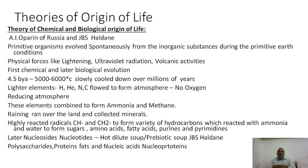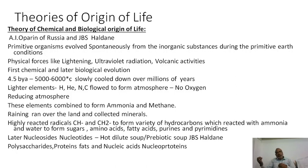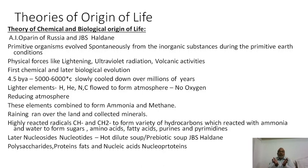Primitive organisms evolved spontaneously from inorganic substances during the primitive earth conditions. The present earth atmosphere is rich in oxygen, but the primitive earth atmosphere had no oxygen. The temperature at that time was very very high — it was very hot on the surface of earth. Physical forces like lightning, ultraviolet radiation, and volcanic activities were very different, and these might have created the kind of atmosphere that generated life from chemical substances — hence this is called the chemical and biological origin of life.